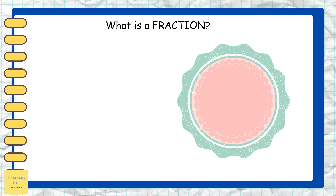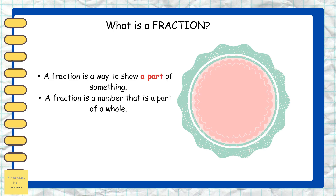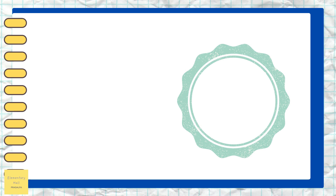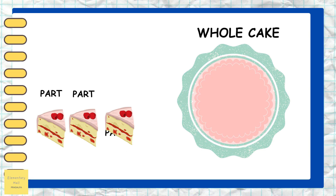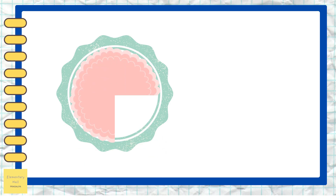Do you know how we divided the cake into four equal slices? Fractions helped us! What is a fraction? A fraction is a way to show a part of something. A fraction is a number that is a part of a whole. Today we divided the cake into four equal slices. Each slice is a part of this whole cake.